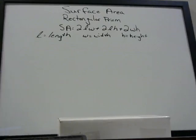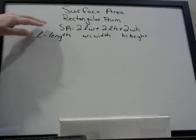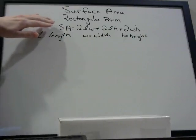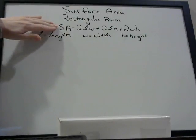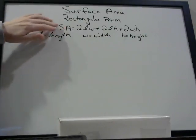Here we're going to talk about how to find the surface area of a rectangular prism. A rectangular prism is also sometimes called a right prism. The formula for this type of problem is on the formula sheet, so you don't need to memorize it, but you do need to understand it. So it's surface area, SA.